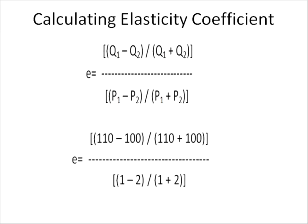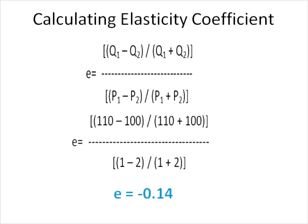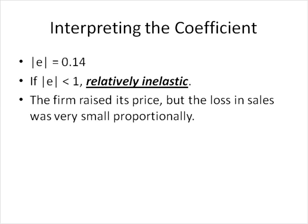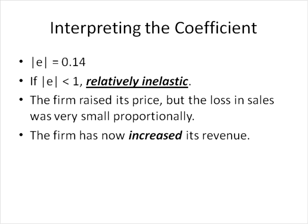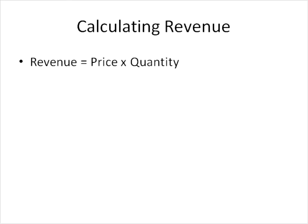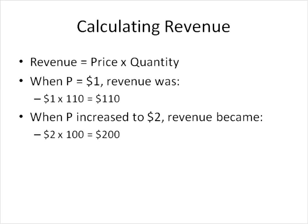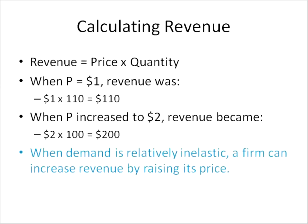Here's the formula, and here are the numbers from the previous slide plugged in — quantities on top, prices on the bottom. Working the algebra gives an elasticity coefficient of negative 0.14. The absolute value of 0.14 is less than 1, which means demand is relatively inelastic at this point. The firm raised its price but didn't lose much in sales, meaning it increased its revenue. Revenue is price times quantity: when price was $1, revenue was $110; when the price increased to $2, revenue increased. So when demand is relatively inelastic, raising price increases the firm's revenue.